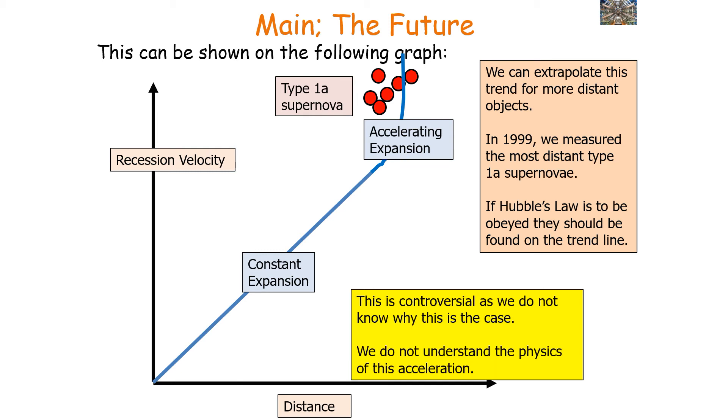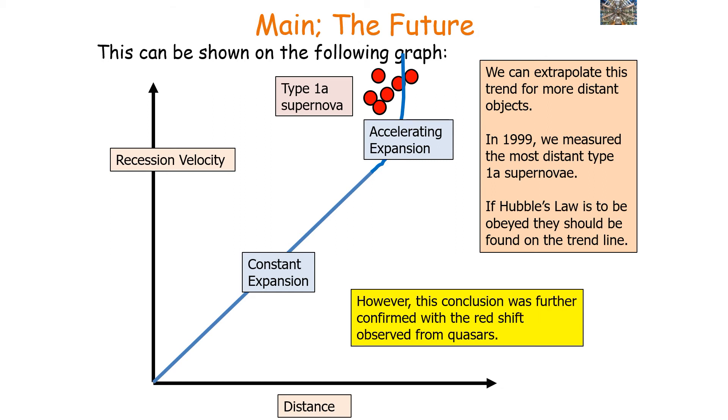Now this is controversial as we don't know why this is the case. We do not understand the physics of this acceleration. However, this conclusion was further confirmed with redshift observed from quasars, which are even more distant objects than the Type 1a supernovae we observed first.